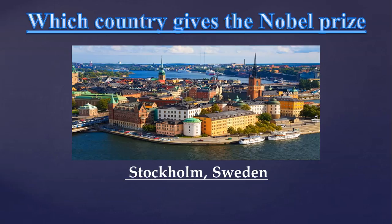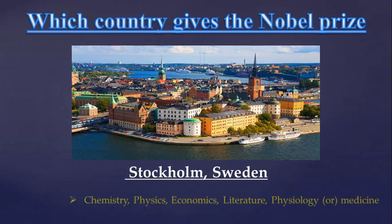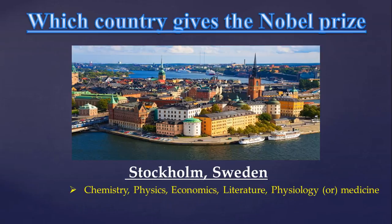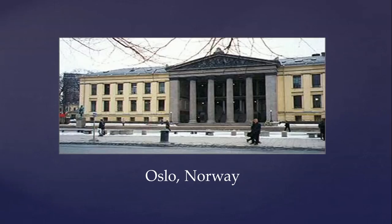Except the Peace Prize, the other prizes — Nobel Prize in Chemistry, Physics, Literature, and Medicine or Physiology — these five are given in Stockholm, Sweden. But the Peace Prize is given in Oslo, Norway.